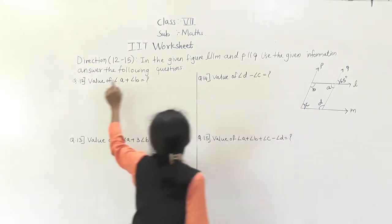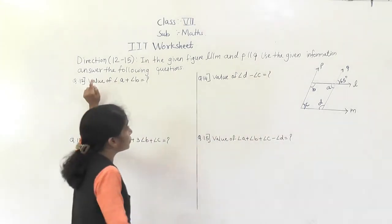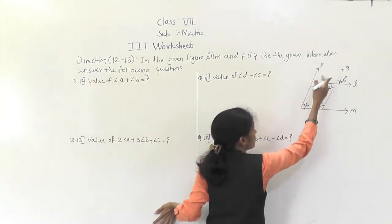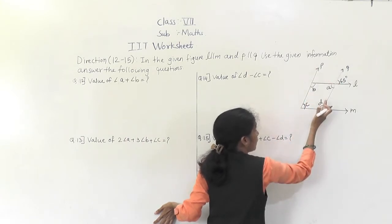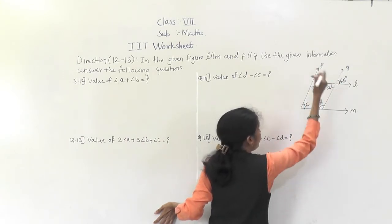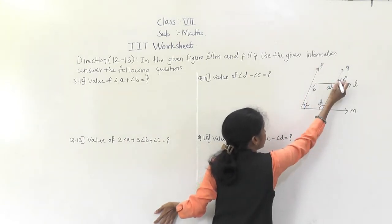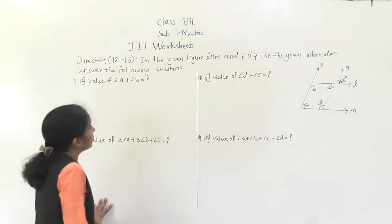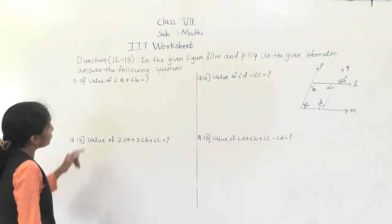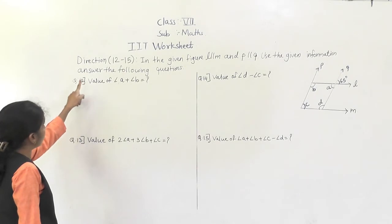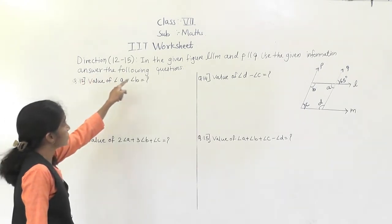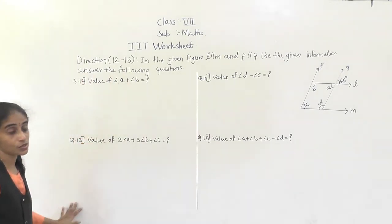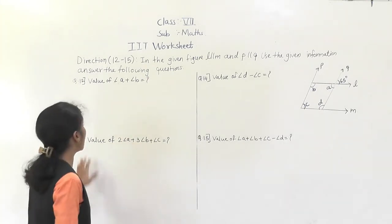Use the given information: the two lines P and Q are parallel, L and M are parallel, and angle B is 65 degrees. Now use the given information and answer the following questions.